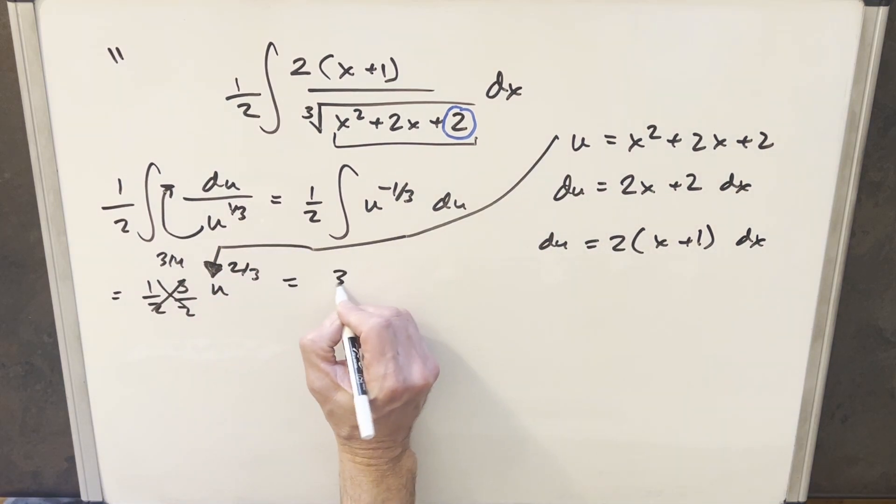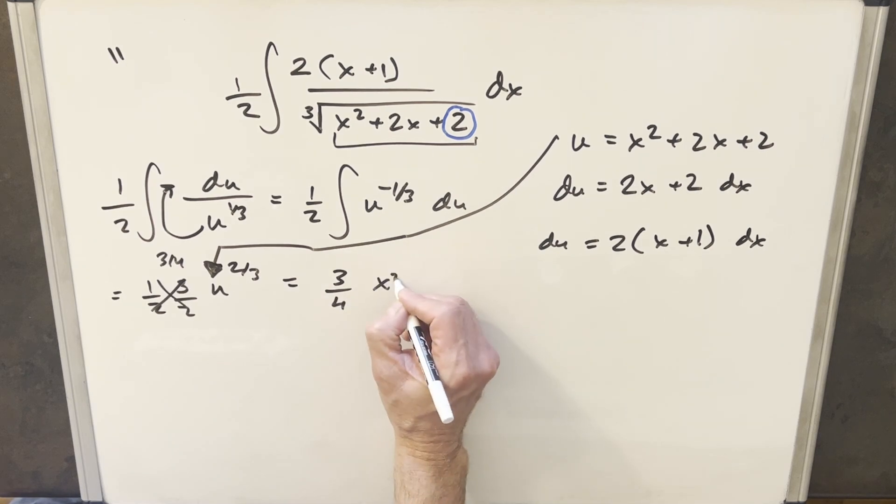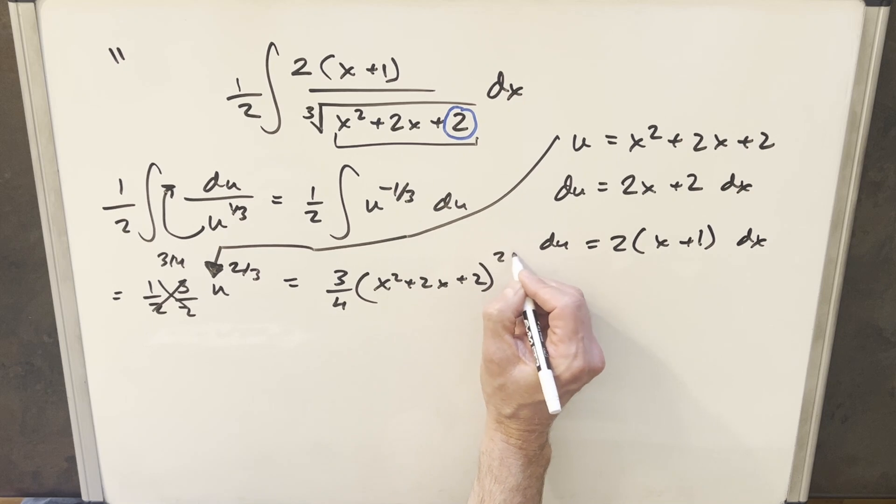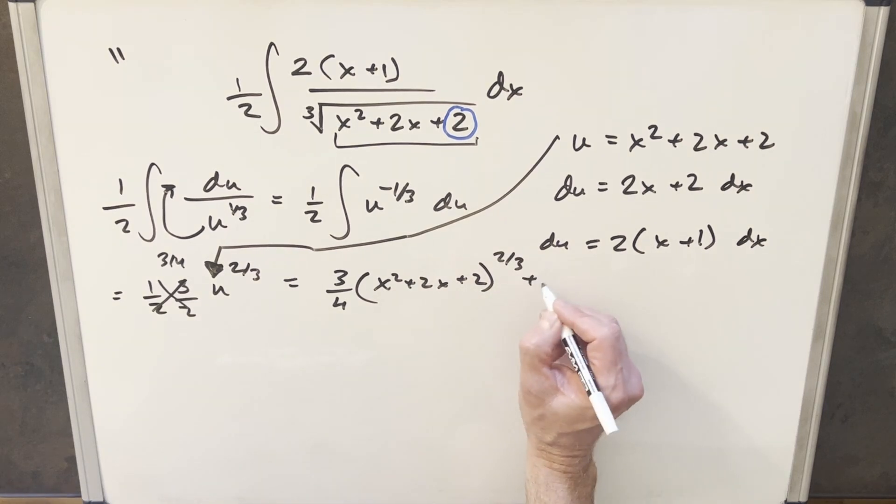So for the final solution, we're going to have 3 over 4, x squared plus 2x, plus 2, all to the 2 thirds power. Put a plus c, and that's it.